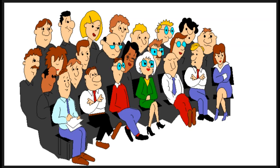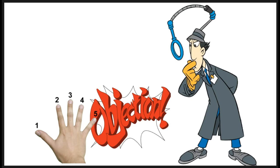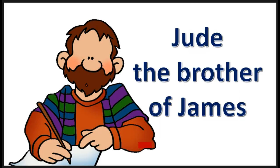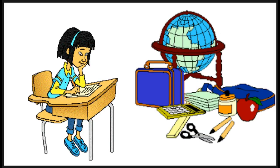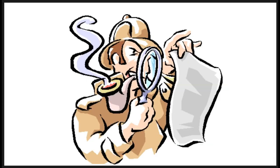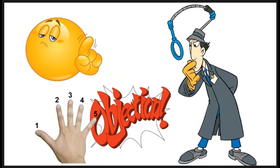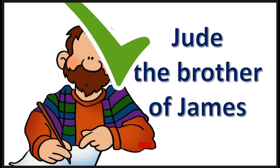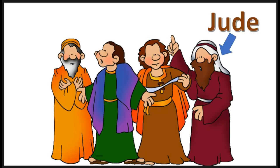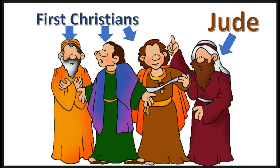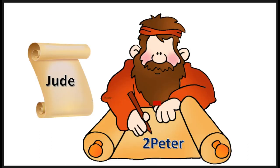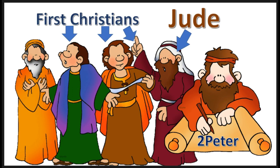Ladies and gentlemen, now that you have seen the five reasons given to doubt the authorship of Jude as being Jude the brother of James, and there are no good reasons, we can say this: the practice of a good historian is to start with what the text says. The text says it was written by Jude the brother of James; there are no good reasons to doubt that, therefore the author of Jude is Jude the brother of James. Since Jude the brother of James lived during the first generation of Christians, if Jude is connected with 2 Peter, then the author of 2 Peter was alive during the first generation of Christians.